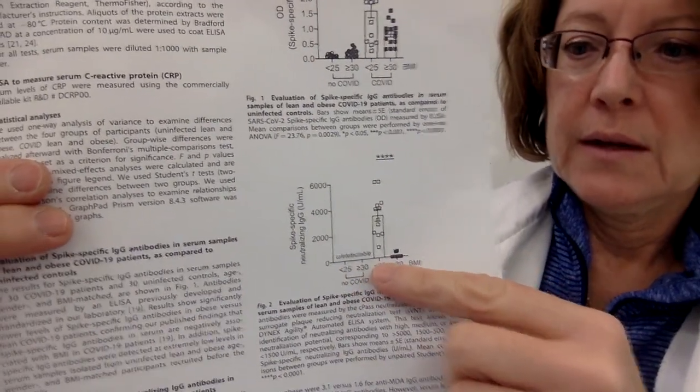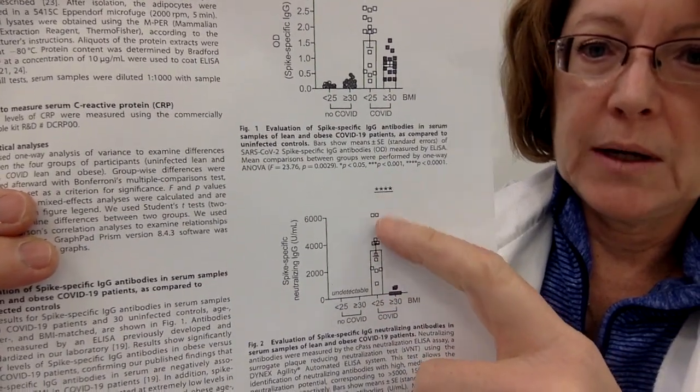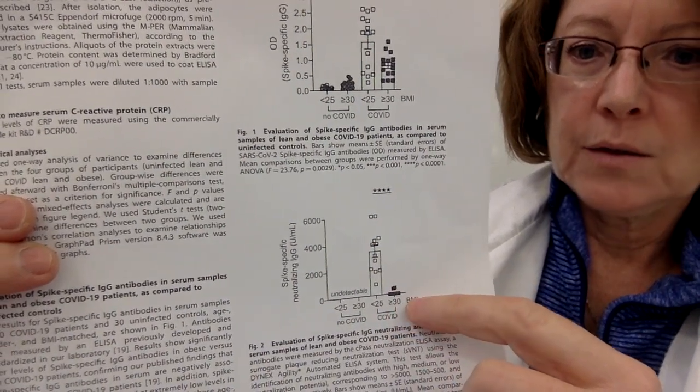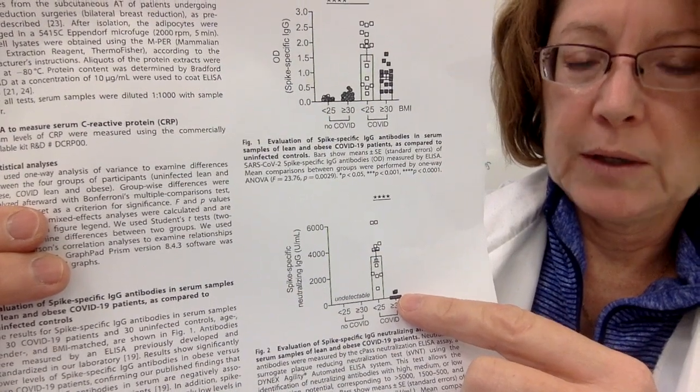However, here, this group had a BMI under 25, so a normal BMI, and they made a lot of spike neutralizing antibody, lots of antibody. This is the group with a BMI over 30, not much spike neutralizing antibody.